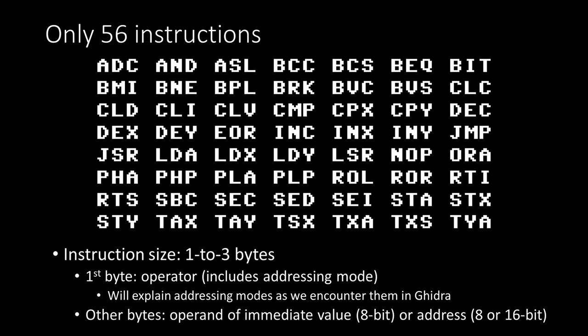The instruction size is anywhere from one to three bytes. The first byte specifies the operator, including the addressing mode. If there are operand bytes, that will either be an immediate value — some constant for it to act on — or an address, 8 or 16-bit.